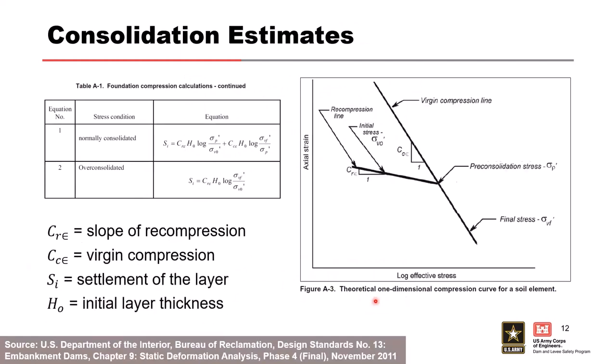Straight from Design Standard Number 13, this is the camber design section. We'll be using these equations for normally consolidated and over-consolidated materials in the exercise. I'll give you all the values needed, and we'll calculate foundation consolidation and add it to embankment settlement to determine the required camber.